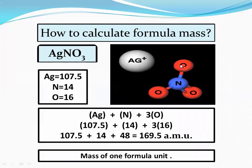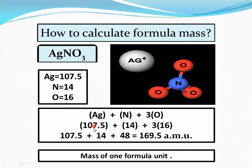How to calculate formula mass: observe this diagram — it is silver nitrate, formula AgNO3, with one silver atom, one nitrogen atom, and three oxygen atoms. The atomic mass of silver is 107.5, nitrogen is 14, and oxygen is 16. Silver is present one time, nitrogen one time, and oxygen three times. Place plus signs between elements, then substitute masses: 107.5 plus 14 plus (16 × 3 = 48). Adding them gives 169.5 AMU — the formula mass of silver nitrate.